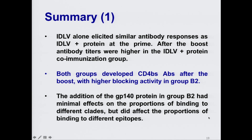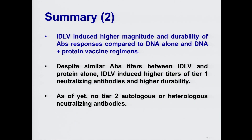In summary, IDLV alone elicited similar antibody responses as IDLV plus protein at the prime. After the boost, antibody titers were higher in the IDLV plus protein co-immunization group. Both groups developed CD4-binding site antibodies after the boost, with higher blocking activity in the IDLV plus protein group. The addition of GP140 protein had minimal effect on the proportion of binding to different clades, but affected binding to different epitopes. IDLV induced higher magnitude and durability of antibody responses compared to DNA alone and DNA plus protein regimens, and despite similar titers to protein alone, IDLV induced higher Tier 1 neutralizing antibody titers and greater durability. So far, we have not detected any Tier 2 autologous or heterologous neutralizing antibodies.